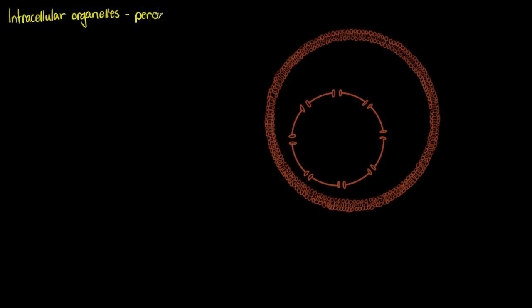So if it's an organelle, we know automatically that it's going to be in eukaryotic cells. So we've got a eukaryotic cell here with its nucleus and we're going to have these small vesicle type structures called peroxisomes and they look a lot like lysosomes.